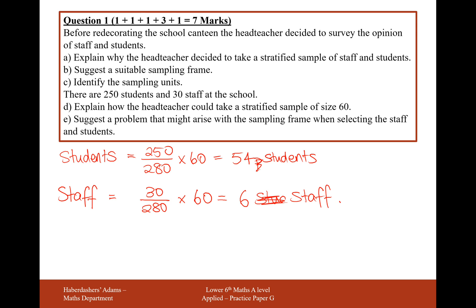Explain how a problem might arise when selecting the students and staff from the sampling frame. Well, there may be absences on the day, or there may be people who are missed off the sampling frame — for example, staff that are accidentally not added to the staff register when they join the school.